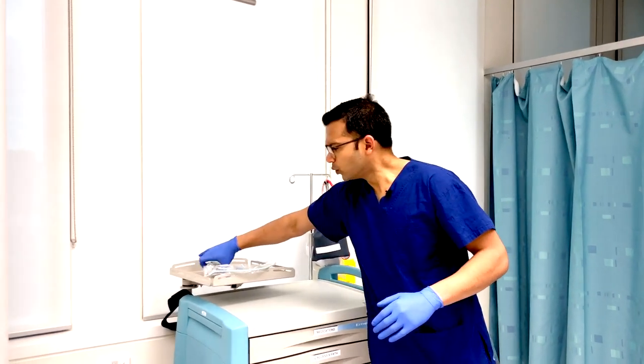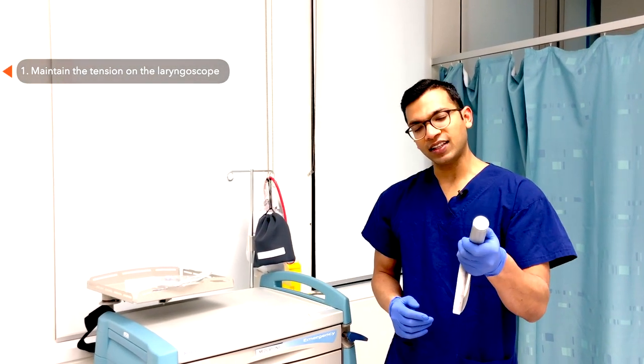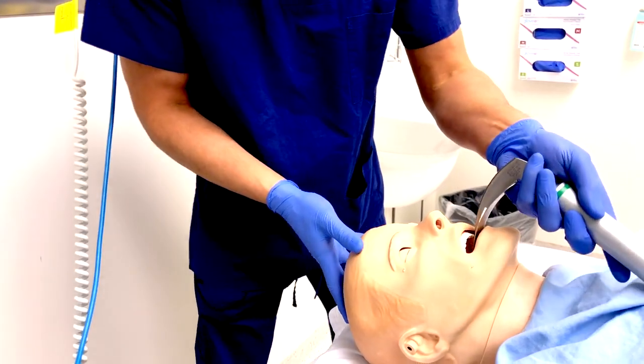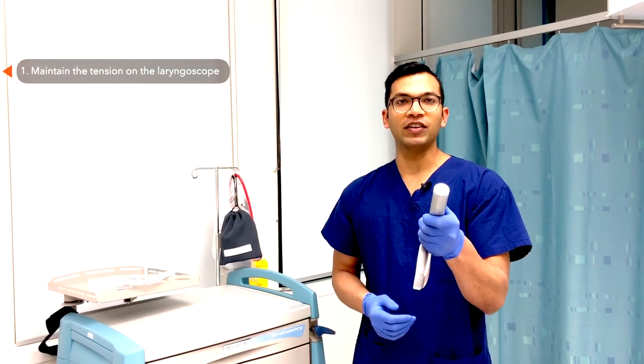First of all, it's really important to maintain the same tension on your laryngoscope, so don't ever let that tension down. You want to keep the airway as open and as good a conduit for your tube as possible, so keeping that tension on is really valuable.